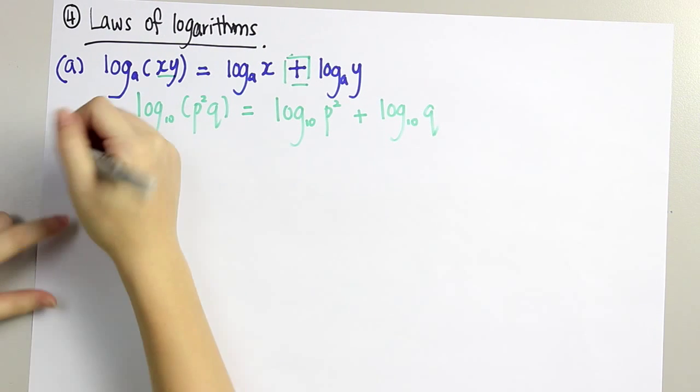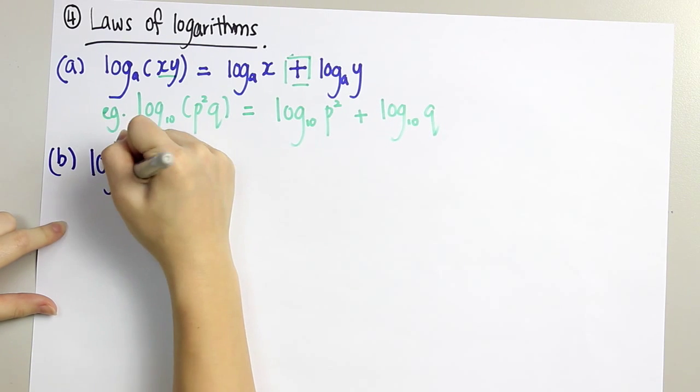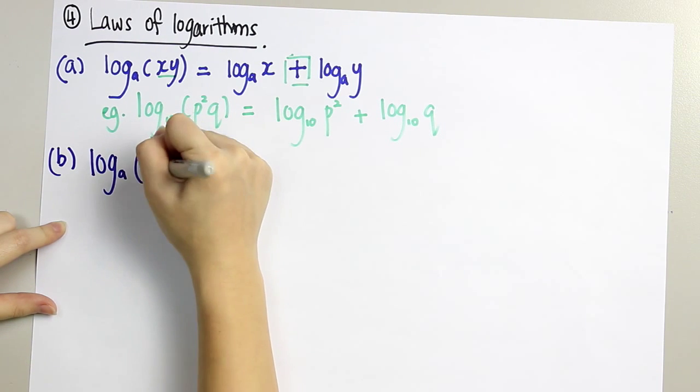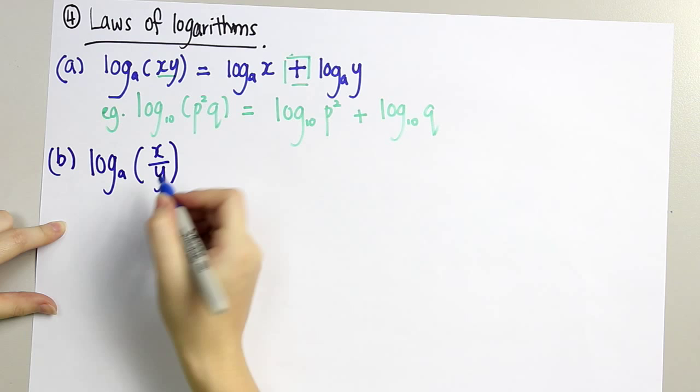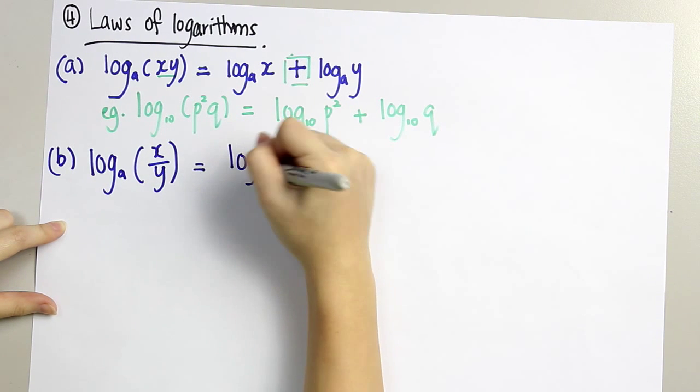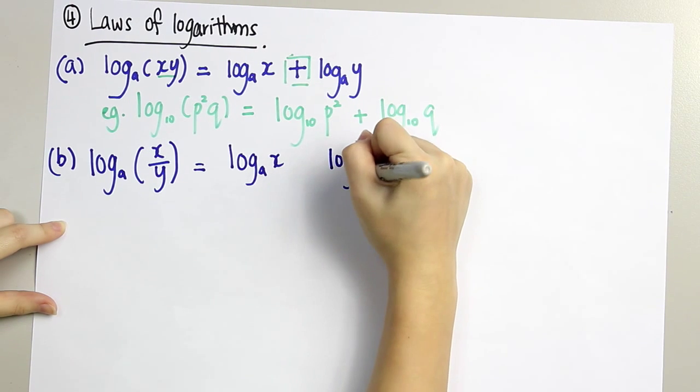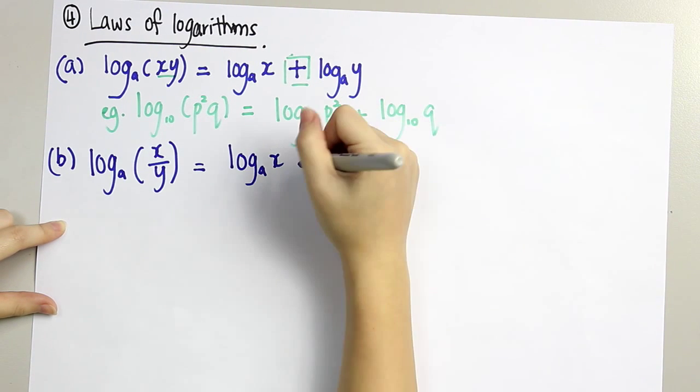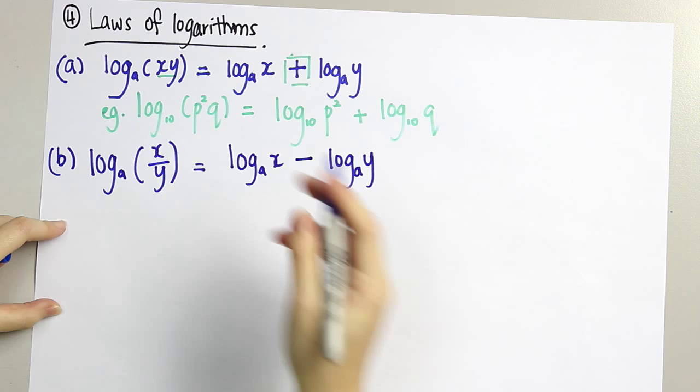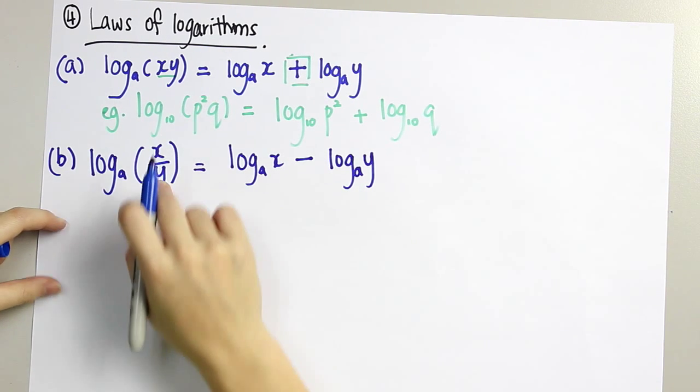Next, if it's log base a of x over y, it means it's division. We separate it both into two, the same case as multiplication. But we put a minus sign. We minus the one below from the one above.